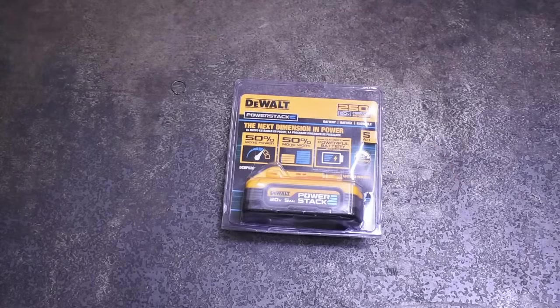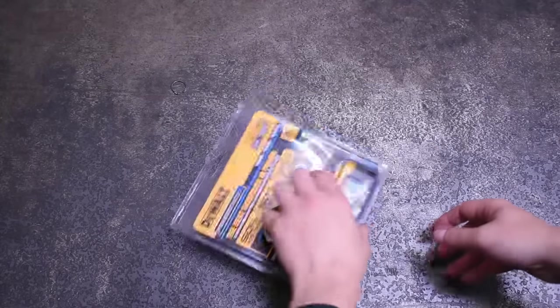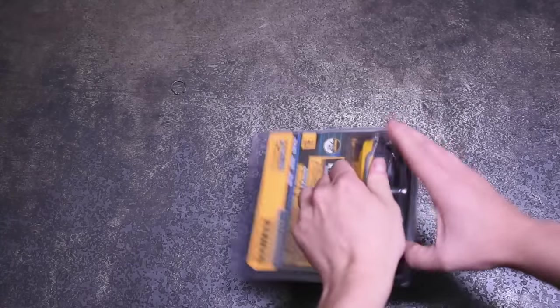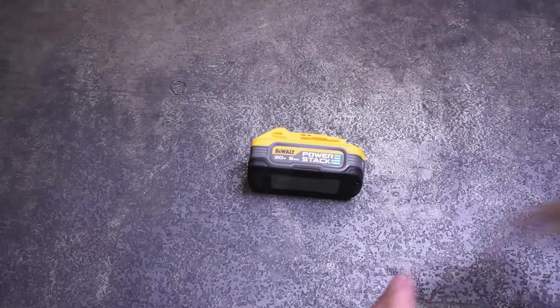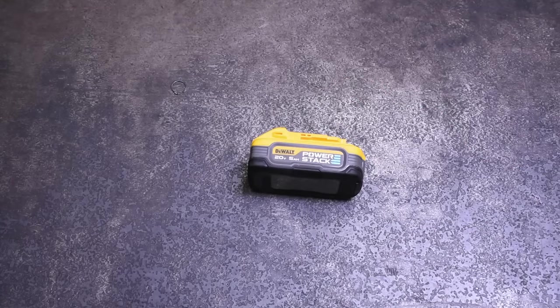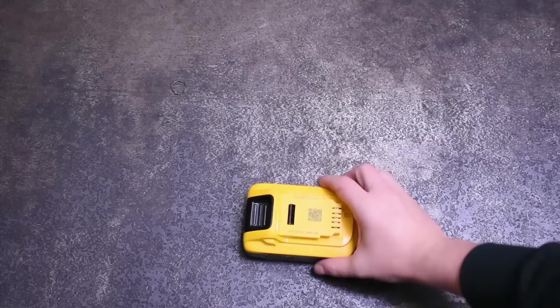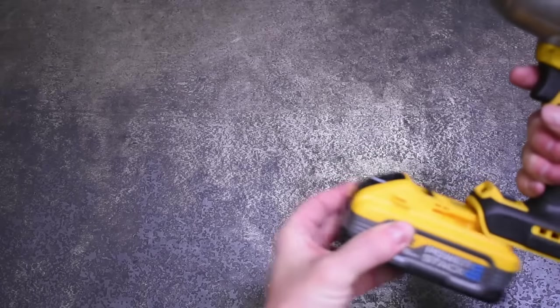Welcome back to the Torque Test Channel. This week's episode is dropping early because out this week is the DCBP520, the 5 amp hour Power Stack battery from DeWalt. That's their latest and largest model using pouches instead of cylindrical cells, and it's supposed to be a lot of things. We're going to strap it on.